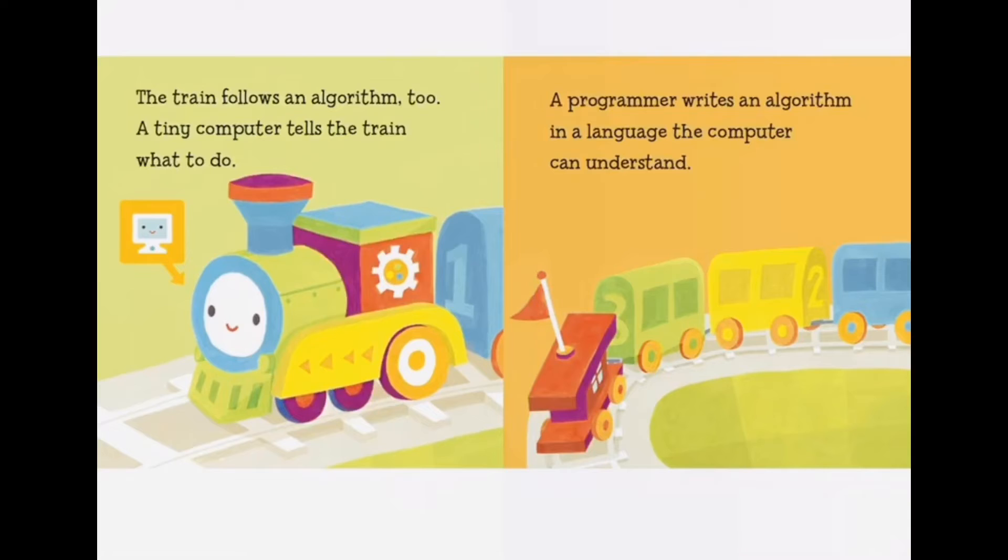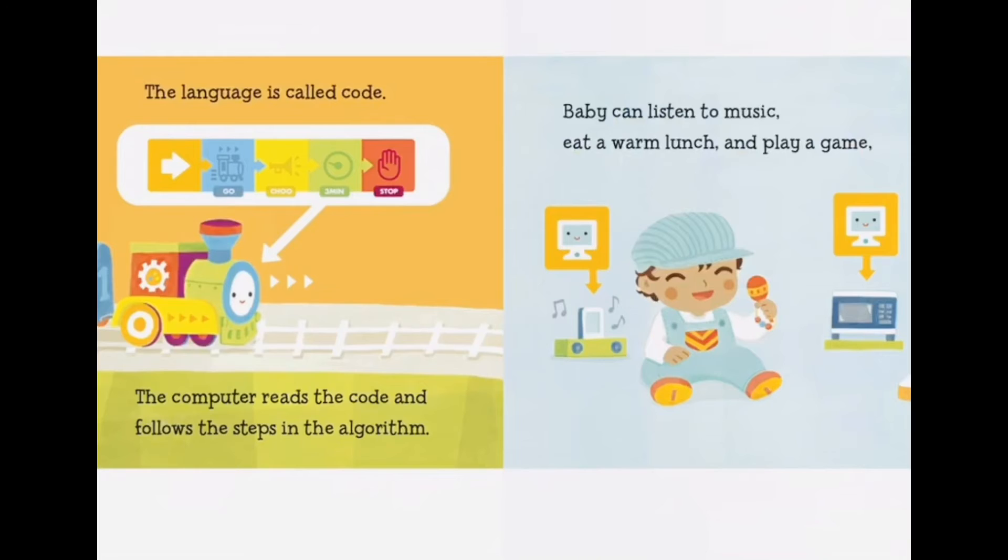The train follows an algorithm too. A tiny computer tells the train what to do. A programmer writes an algorithm in a language the computer can understand. The language is called code.